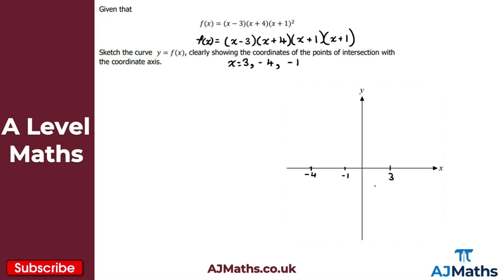We also need the y-intercept, which is e. We can get that by multiplying the integer values in each bracket: (−3) × 4 × 1 × 1 = minus 12. So it goes through the y-axis at minus 12. For the general shape, multiplying x × x × x × x gives x⁴, so it's a positive quartic and we get the W-shape.